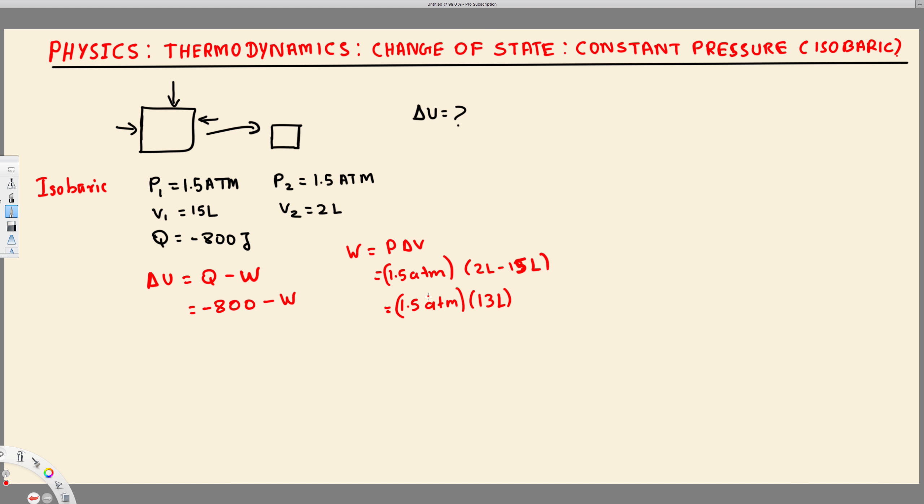But we want the final answer in joules, so we have to multiply this one by 101.3 joule per atm liter. So here atm atm cancel, liter liter cancels, and the final answer we will get in terms of joules.